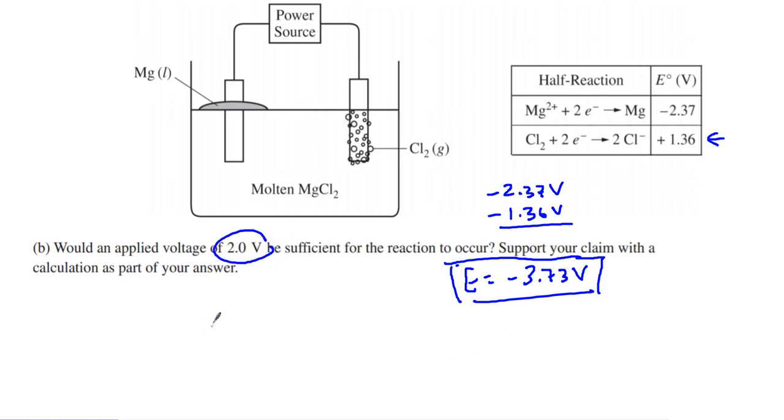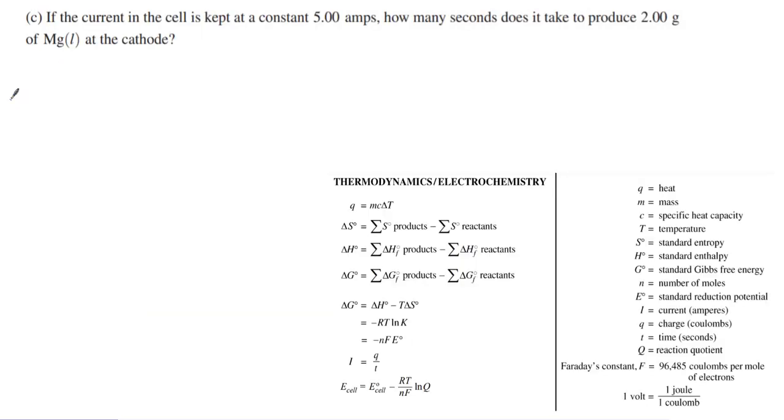Is 2 volts enough voltage in order to get this to occur? No, it is not. And so what's happening here is the magnesium positive 2 plus the 2 chlorides is making magnesium plus chlorine gas. And so this ends up becoming negative 3.73. And it is no. We need at least negative 3.73 volts of electricity in order to get this reaction to actually work.